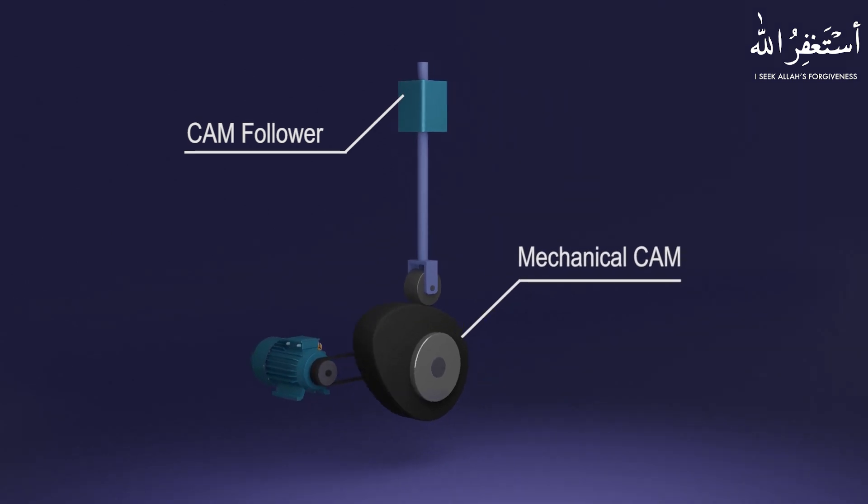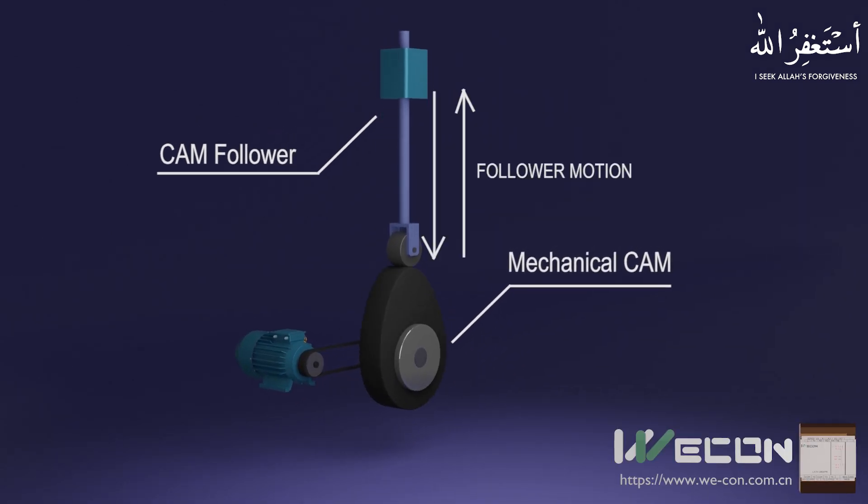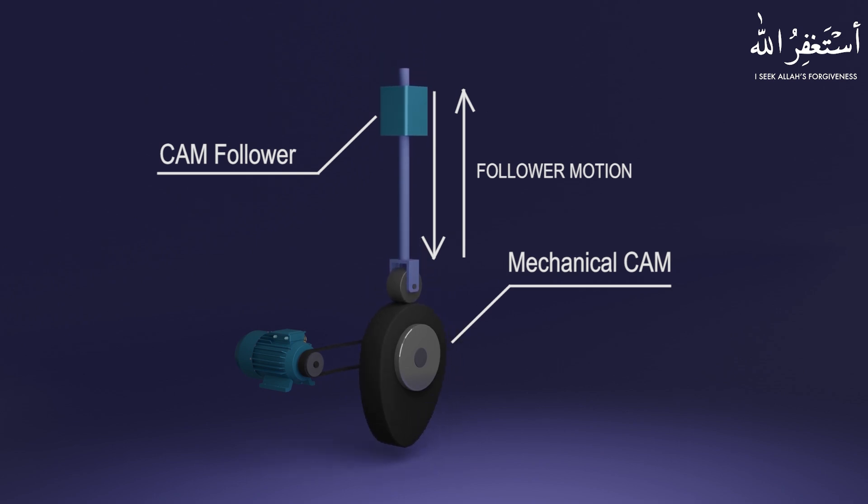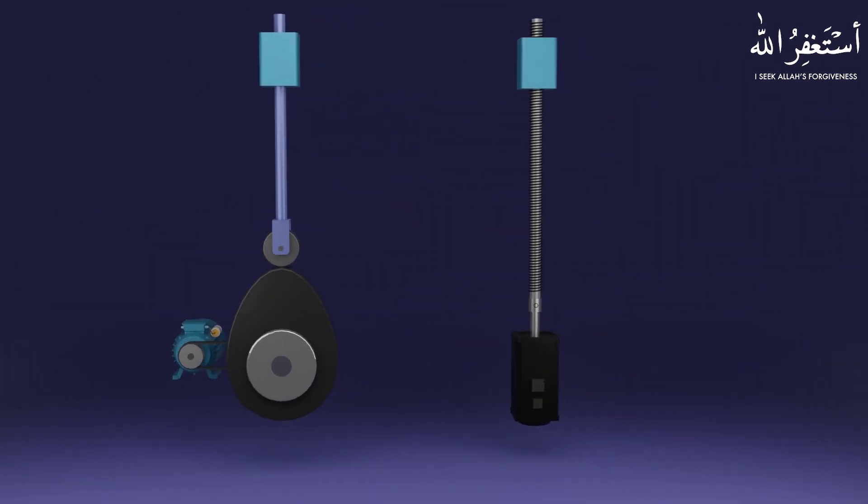Cams convert ordinary shaft rotation into a more complicated pattern of motion. This is accomplished by keeping one or more followers in contact with the surface of a rotating cam. The follower may move as a slider, reciprocating in a linear direction, or as a rocker. This cam follower motion pattern can be achieved by servo motors and ball screws.